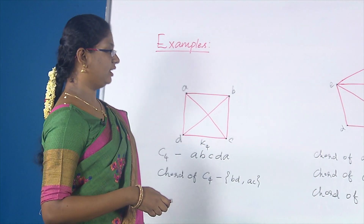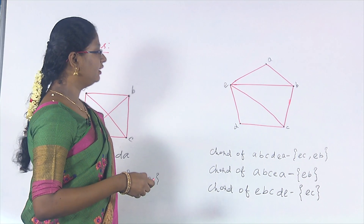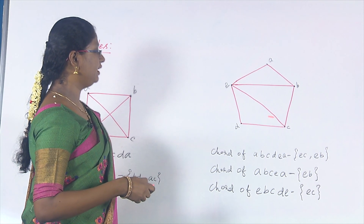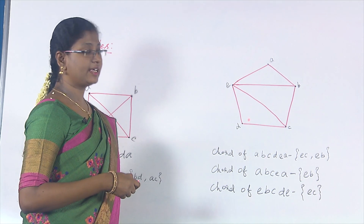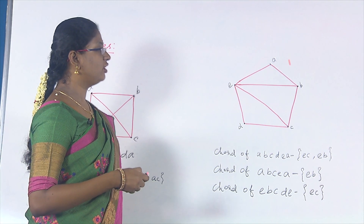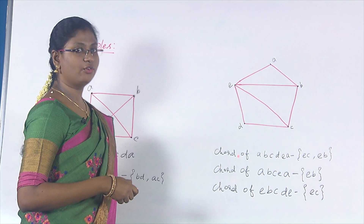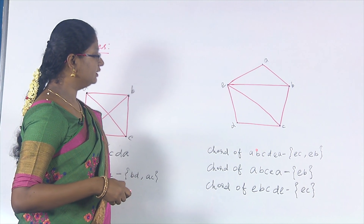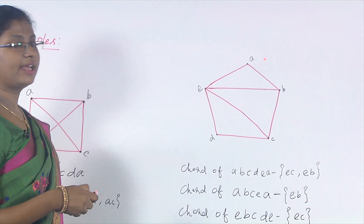Next we will see another example. Here I have a graph consisting of five vertices A, B, C, D, E. I am going to consider the cycle of length 4 and the cycle of length 5; there is no cycle of length greater than 5. So it is enough to consider cycles of length 4 and 5. The cycle A, B, C, D, E, A is a cycle of length 5.